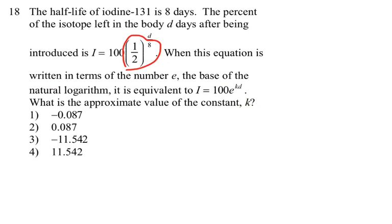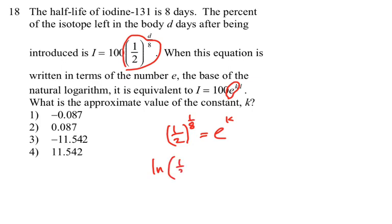Number eighteen: we have two expressions where the coefficients are equal to each other. So one half to the 1 over 8 power should equal e to the k power. To find k, we set them equal and take the natural log of both sides. Then ln of one half to the one-eighth power equals k. Putting that into the calculator gives negative 0.087.